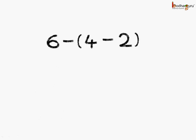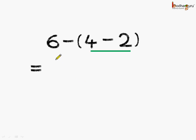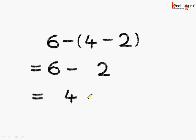Now, let us try another way. This time we will group 4 and 2. So this becomes 6 minus, open bracket, 4 minus 2, close bracket. We know 4 minus 2 is equal to 2. So, 6 minus 2 is equal to 4.